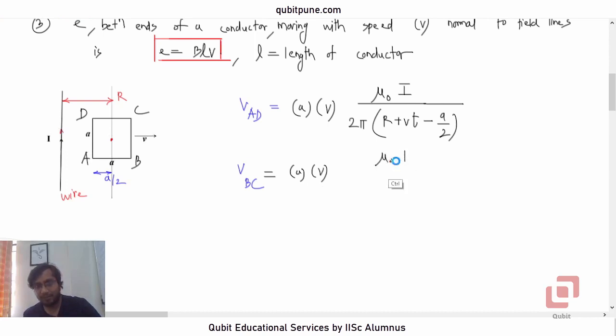So, mu not I. Same formula. Mu not I upon 2 pi x. So, let us first consider the movement of the center of the loop again. So, that will be R plus VT. And now, note that BC is A by 2 units to the right of the center of the loop. So, we have to add A by 2 to this.